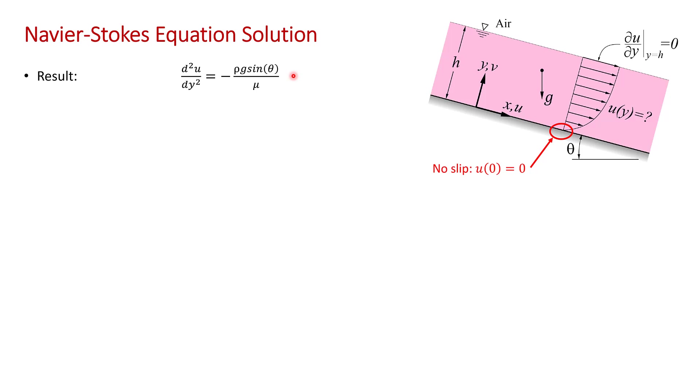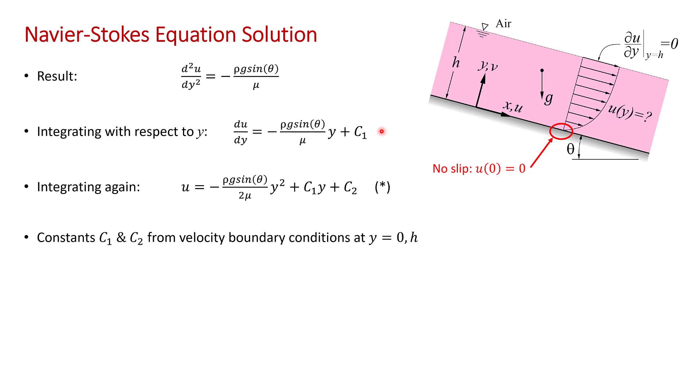So separating variables and integrating once, we get du/dy = -ρg sin θ/μ times y plus some constant. And we can integrate that again to get the velocity field -ρg sin θ/μ. And then, of course, this becomes y²/2. This becomes c₁y plus another constant. I'm going to call this equation star. So here's our velocity field that we're after with two unknown constants that we get from the boundary conditions that I discussed at y = 0 and y = h.